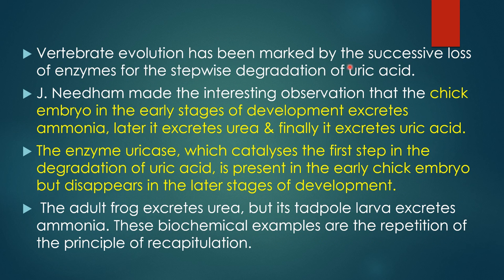Vertebrate evolution has been marked by the successive loss of enzymes for the stepwise degradation of uric acid. An interesting observation is that the chick embryo in early stages of development excretes ammonia, later excretes urea, and finally excretes uric acid. The enzyme urease, which catalyzes the first step in the degradation of uric acid, is present in the early chick embryo but disappears in later stages. Similarly, the adult frog excretes urea, but its tadpole larva excretes ammonia. These biochemical examples represent a repetition of the principle of recapitulation.